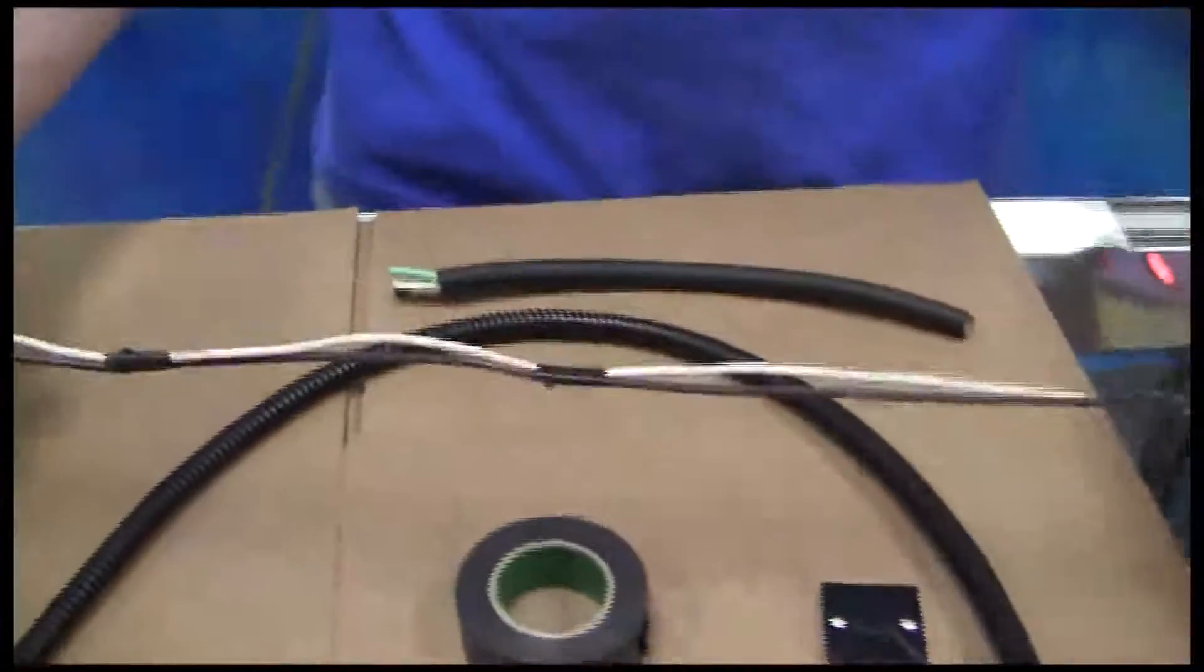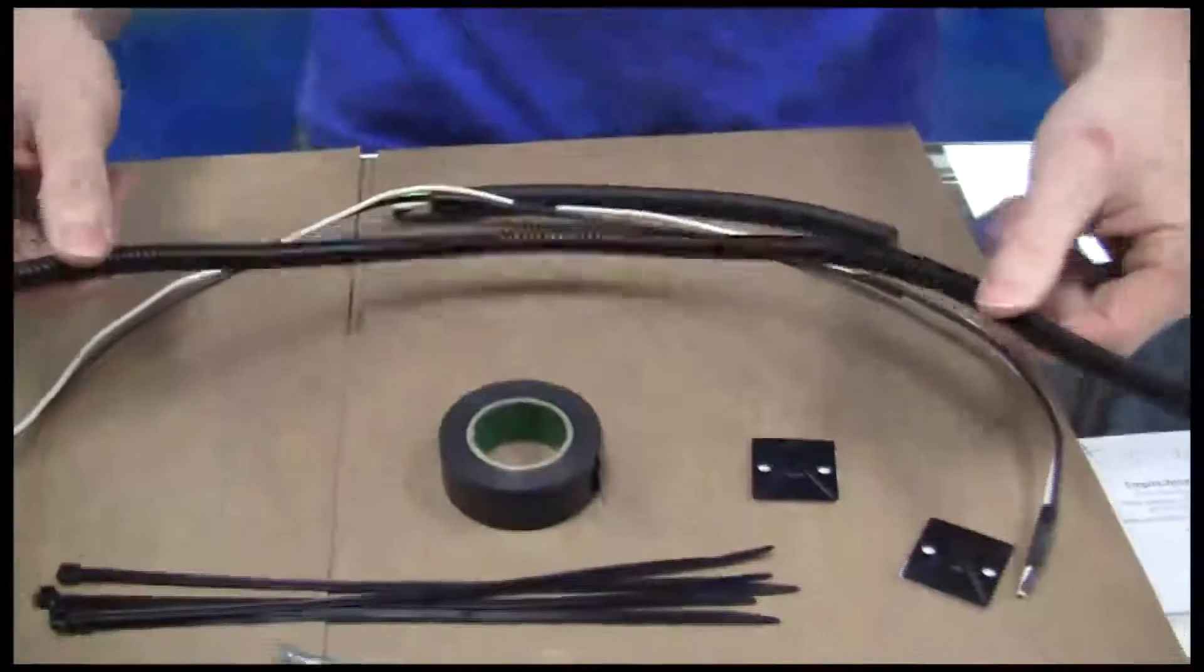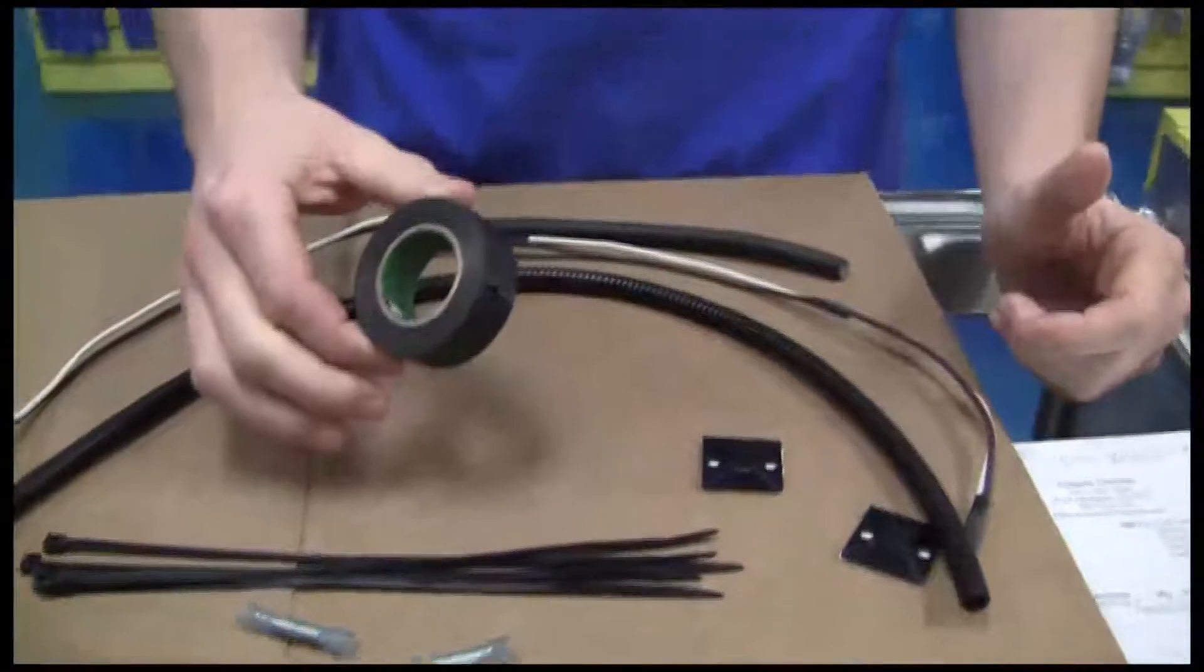First, I'll show you what I got on my table here. To start out, I got some wire that I've already taped up. I have some corrugated loom, and I have a roll of electrical tape.